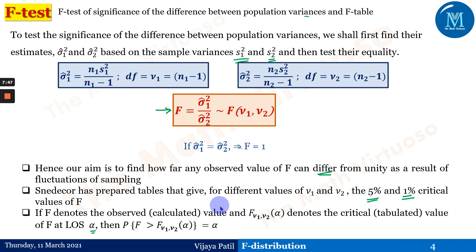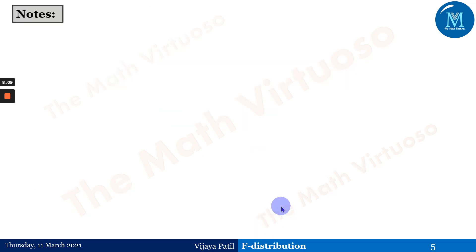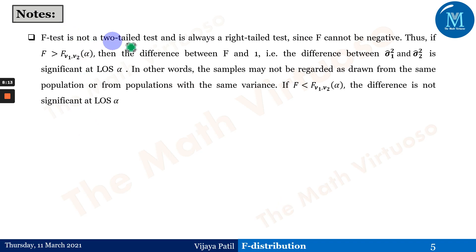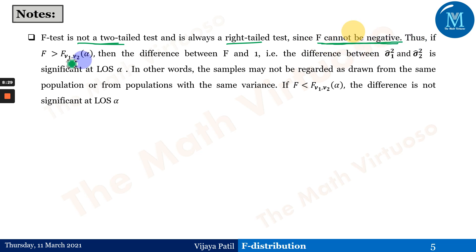Just as the t-distribution has degrees of freedom, so does the F-distribution — but with two degrees of freedom, ν₁ and ν₂, since we are comparing two samples. An important note: the F-test is not a two-tailed test; it is always a right-tail test, since F cannot be negative. This is a very important point to note — F cannot be negative.